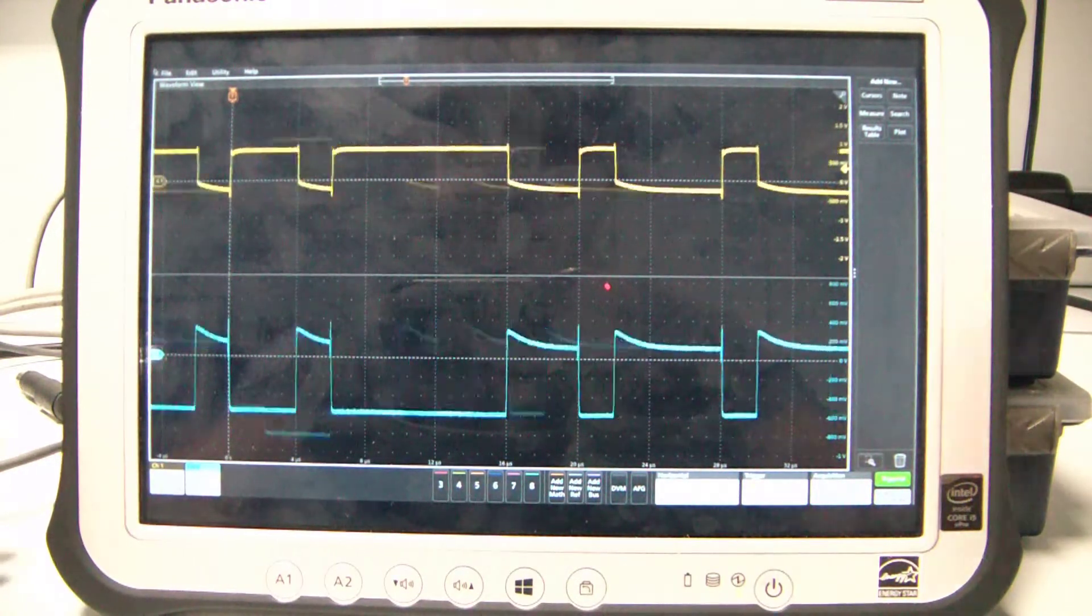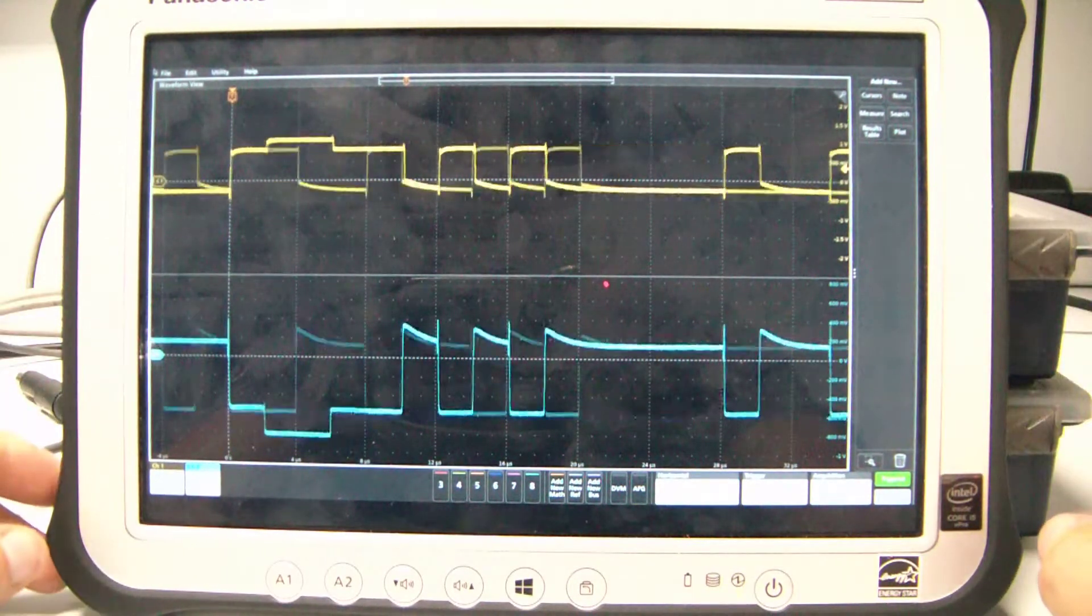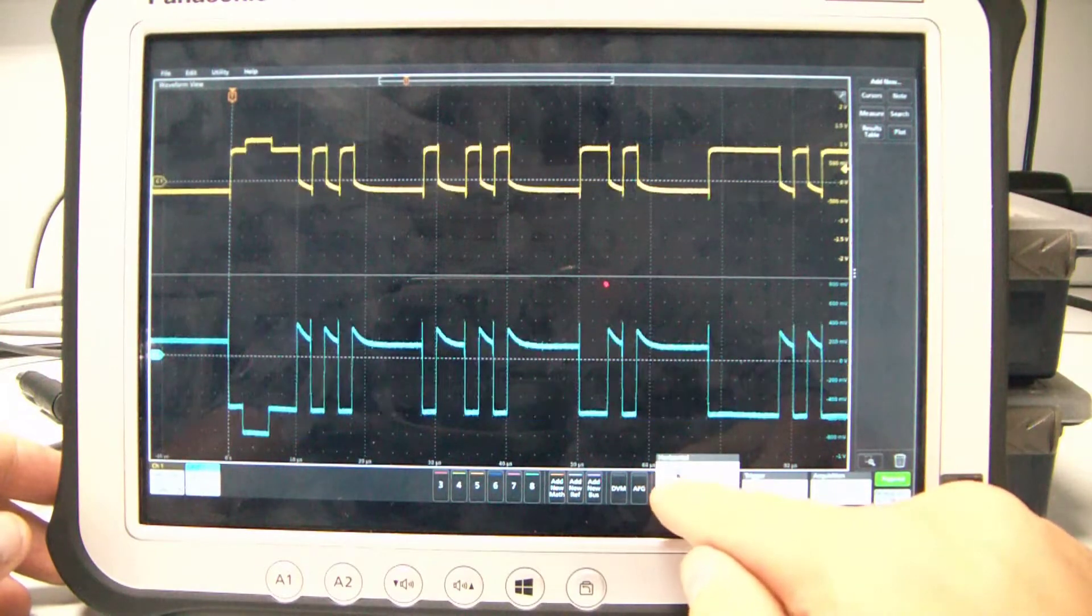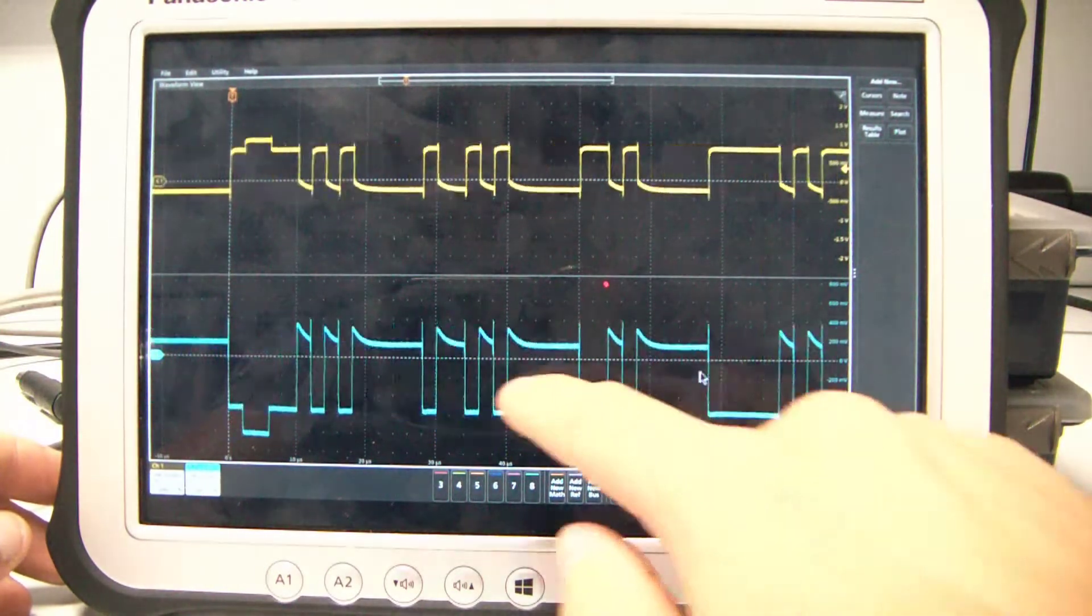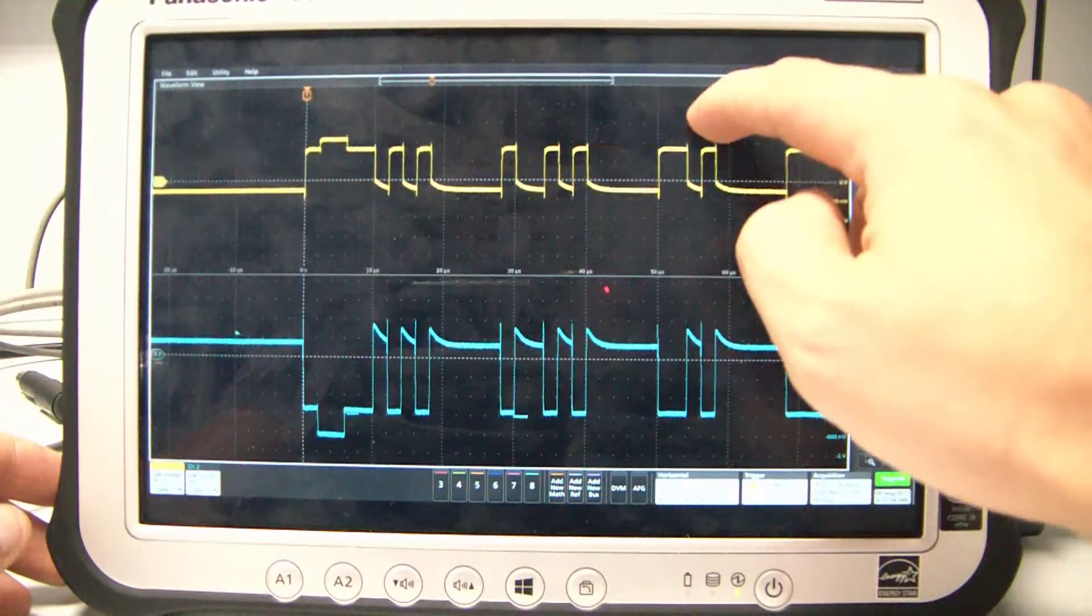So now I can operate the scope normally from my tablet with the touch screen. So I can change the horizontal scale. I can move the waveform vertically, horizontally.